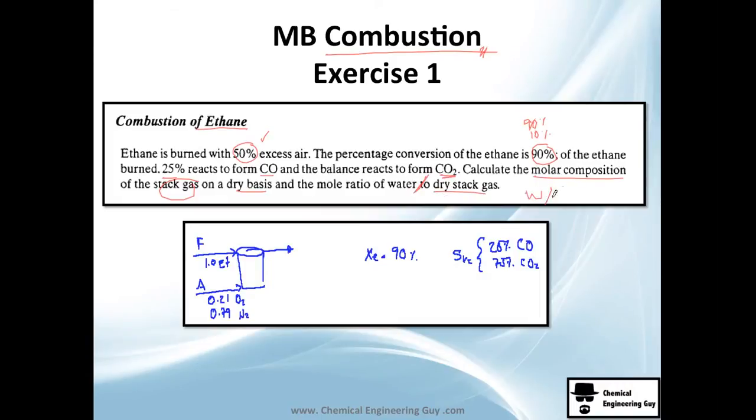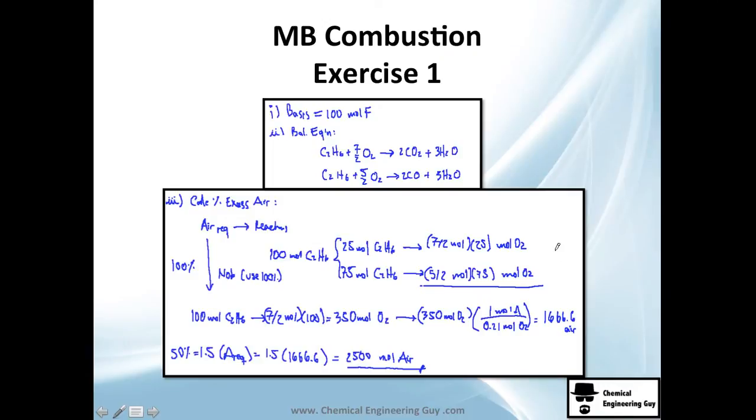We have the feed which is ethane and air which is 21% O2, 79% nitrogen. We have 90% conversion and from this 90%, 25% goes to CO and 75% goes to CO2. Let's choose a basis.